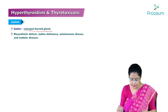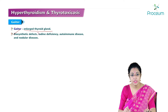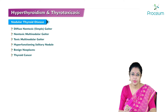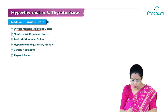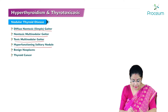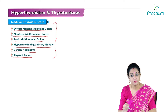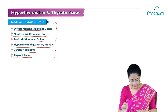Goiter means enlarged thyroid gland. Goiter may be due to biosynthetic defect, iodine deficiency, autoimmune disease, or nodular diseases. Forms of nodular thyroid disease include diffuse non-toxic goiter, non-toxic multinodular goiter, toxic multinodular goiter, hyperfunctioning solitary nodule, malignancy, and benign neoplasm.